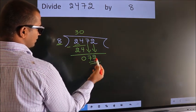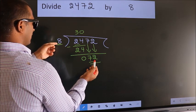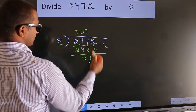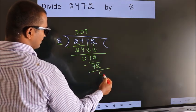So, 72. When do we get 72? In the 8 table. 8 nines, 72. Now, we subtract. We get 0.